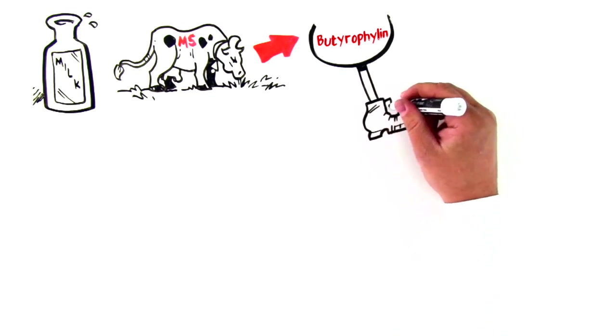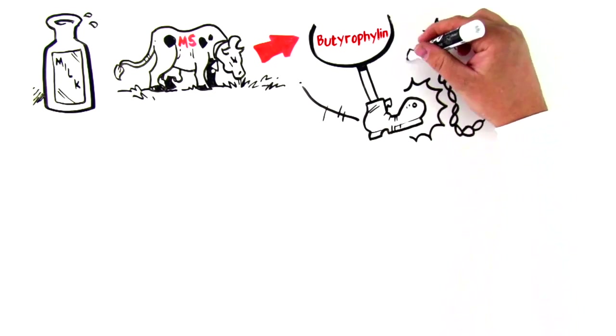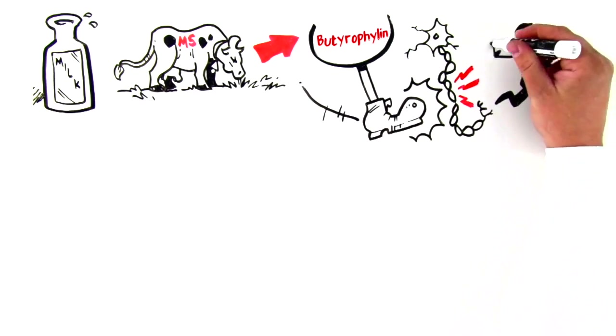This is thought to initiate the autoimmune reaction in MS and cause an abnormal pro-inflammatory response to dairy in people with MS. Therefore, it's best for people with MS to avoid dairy altogether.